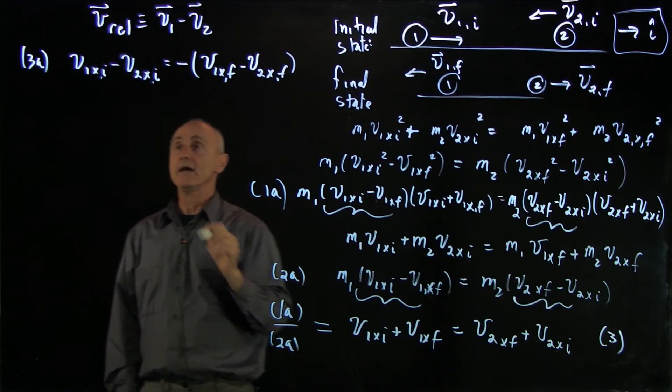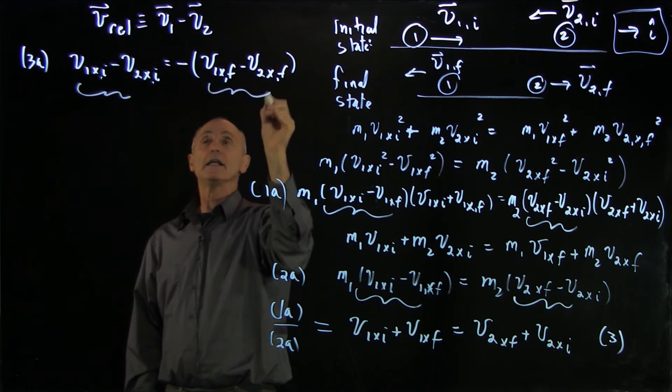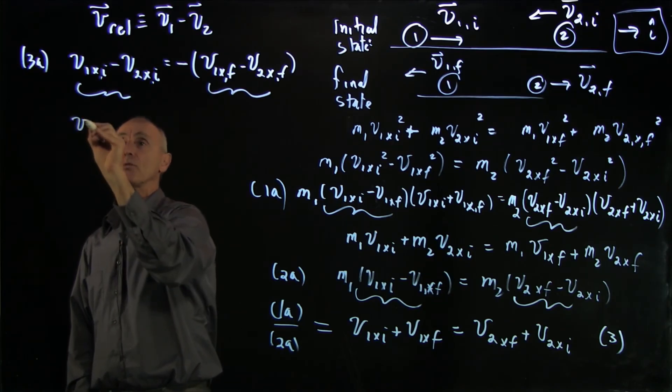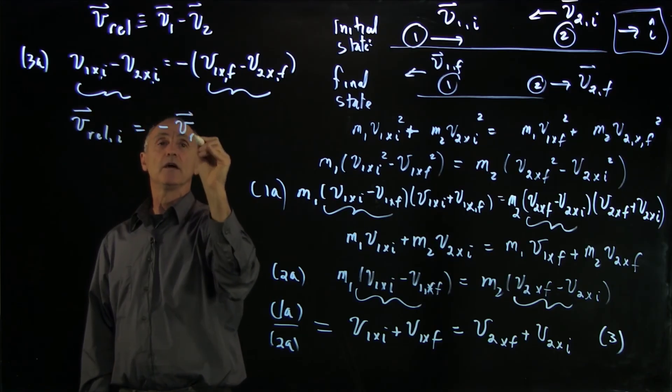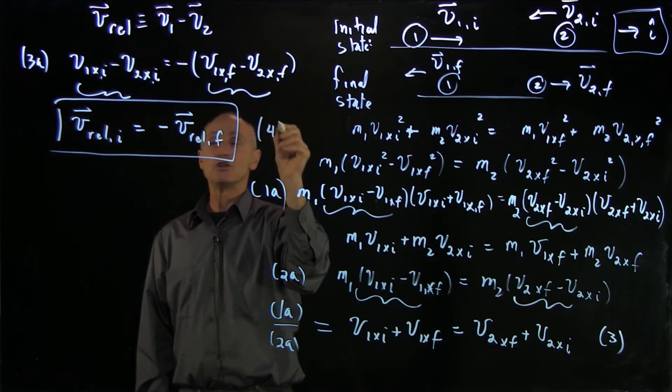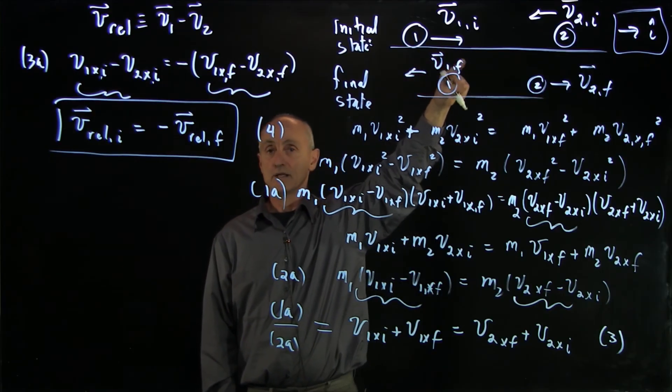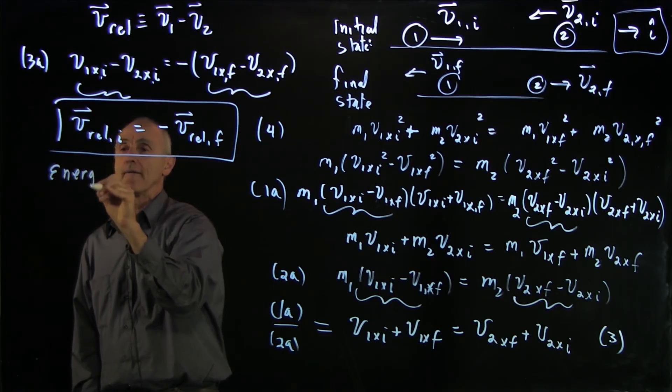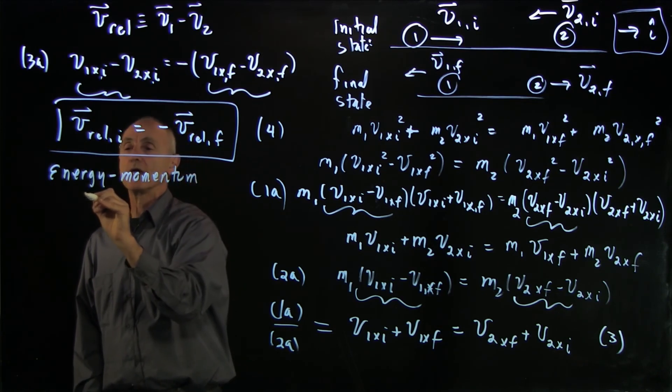And when written this way, this is the initial component of the relative velocity, and in there is the final component of relative velocity. So by combining these two equations, I have this remarkable result that v relative initial equals minus v relative final. And this condition is a very powerful tool for simply analyzing one-dimensional elastic collisions. I'd like to even give this a name. I'd like to call it the energy momentum equation.